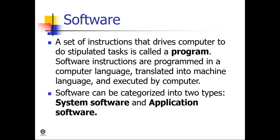Software is also a set of instructions that drives a computer to do a stipulated task; this is called a program. Software instructions are programmed in a computer language, translated into machine language, and executed by the computer. Software can be categorized into two types: system software and application software.